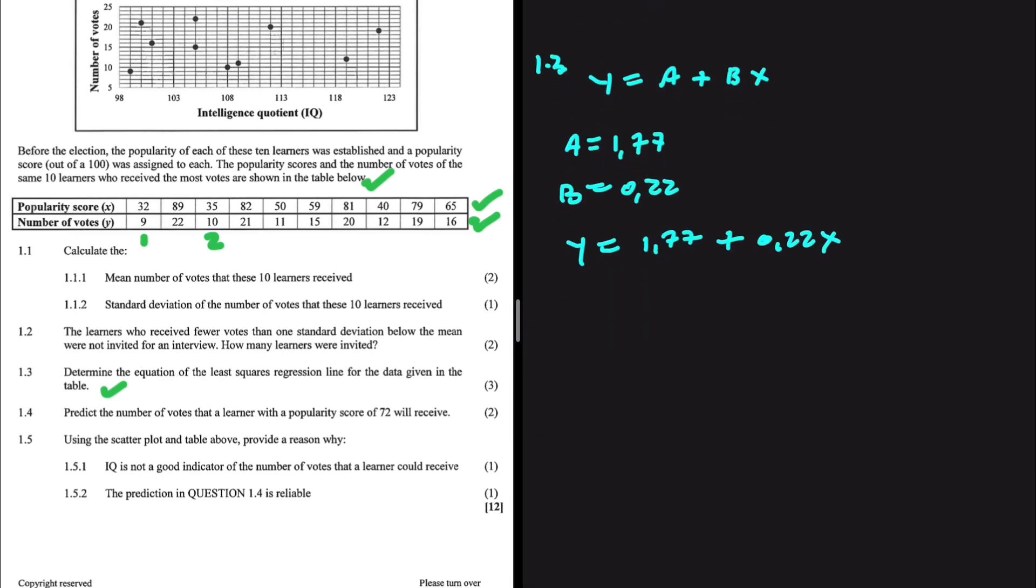Let's go ahead and do 1.4. So 1.4, predict the number of votes that a learner with a popularity score of 72 will receive. The popularity score is the X value, so we just need to substitute it into this equation. We're going to have Y being equals to 1.77 plus 0.22 multiplied by X. What is the value of X? The popularity score, 72. In your calculator, you're going to get 17.61, but you're going to have 17.61 votes. So let's just round it off to 18. So yes, if you have a popularity score of 72, you're going to get about 18 votes.